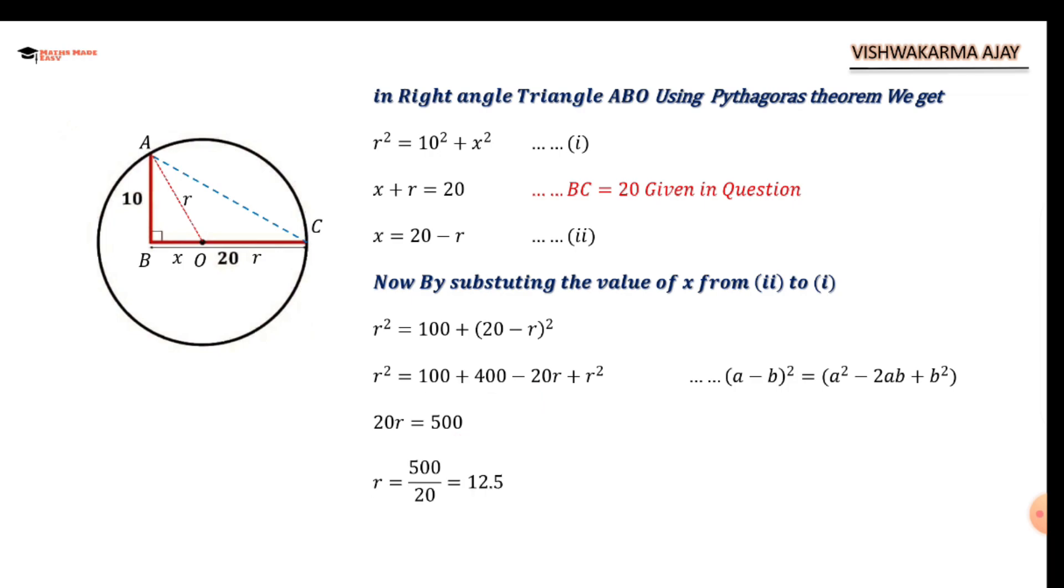So the value of R equals 500 ÷ 40, and after division we get radius as 12.5.